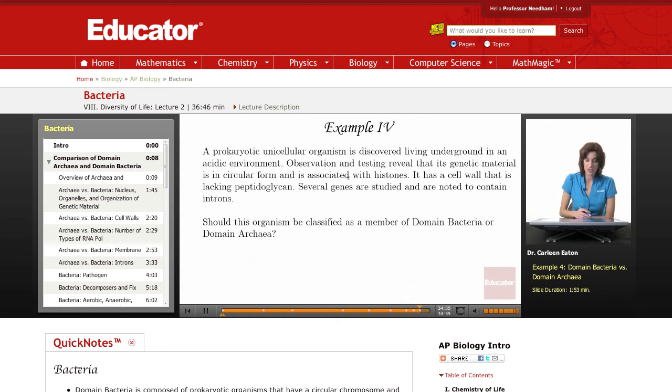A prokaryotic unicellular organism is discovered living underground in an acidic environment. Observation and testing reveal that its genetic material is in circular form and is associated with histones. It has a cell wall that is lacking peptidoglycan.